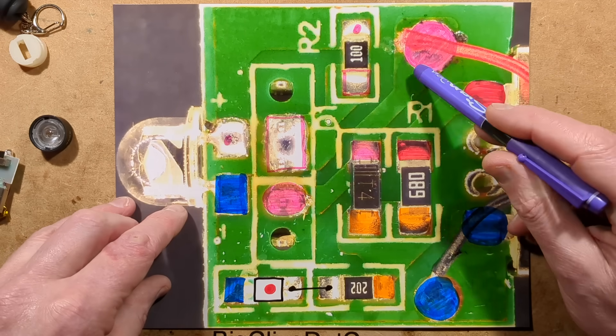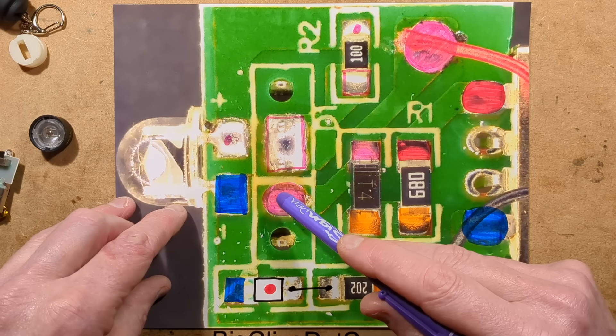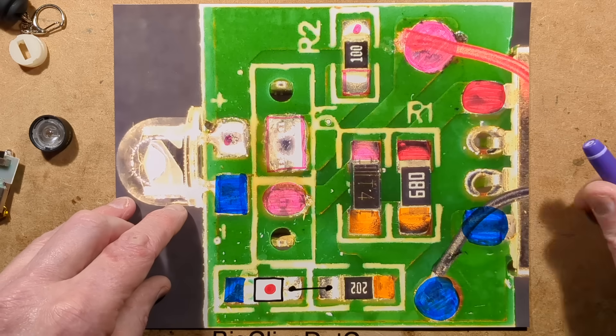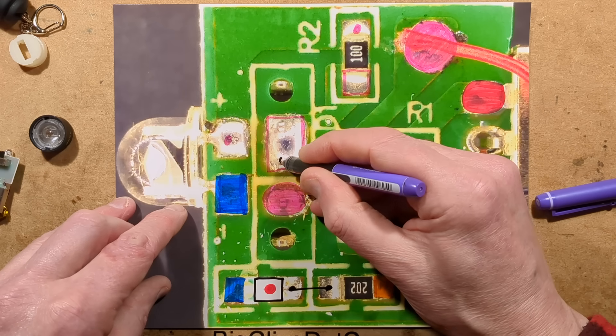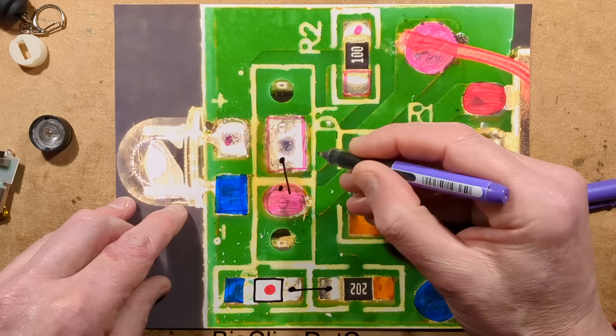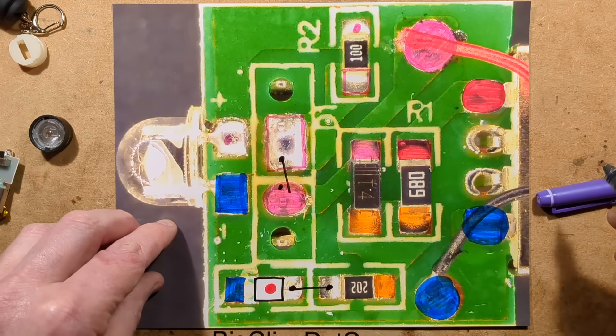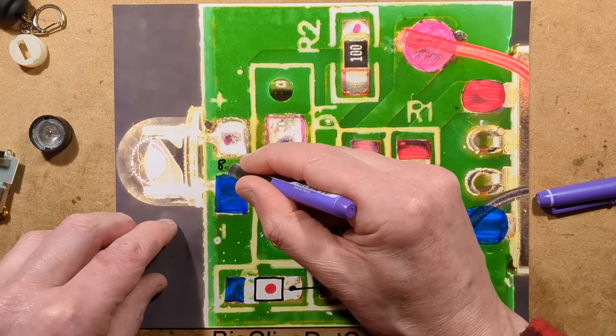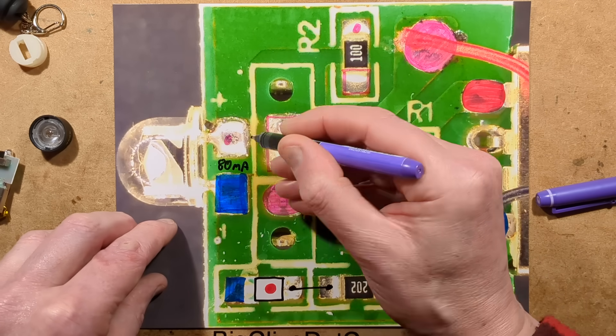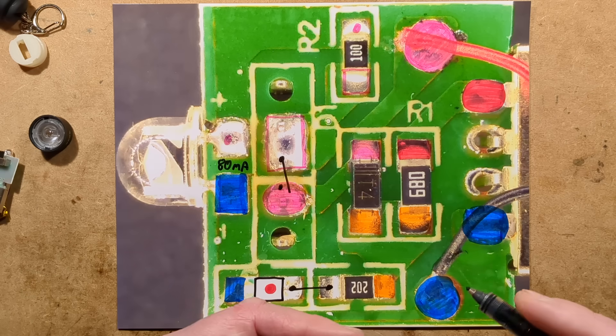When you turn the LED on, it diverts the current from the lithium cell via the switch. Via this 10 ohm resistor, quite a low value, to the LED, and it's running the LED at about 80 milliamps, which is quite ferocious for basically a standard little straw-hat LED.